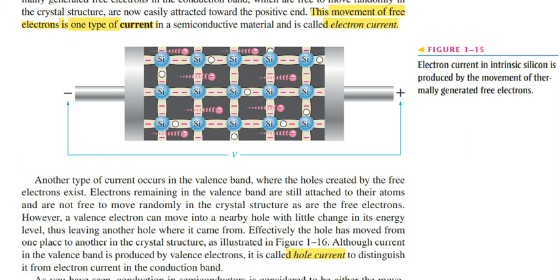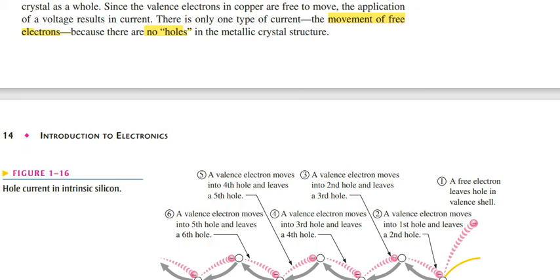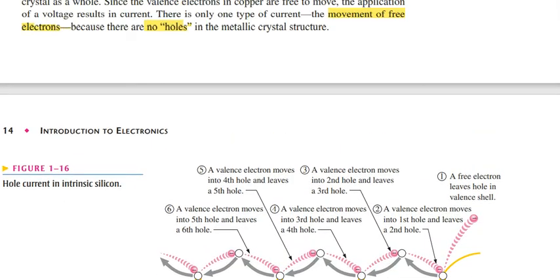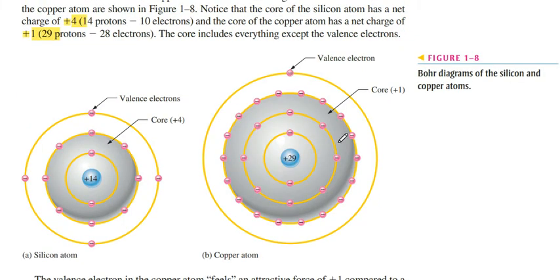He gives the example of copper. In copper, the outermost shell has only one electron, which becomes a free electron and acts as electron current. There is no hole in the valence band because in copper the valence band and conduction band overlap, as shown previously. This is the copper atom diagram in which the valence electron jumps easily to the conduction band and becomes a free electron.